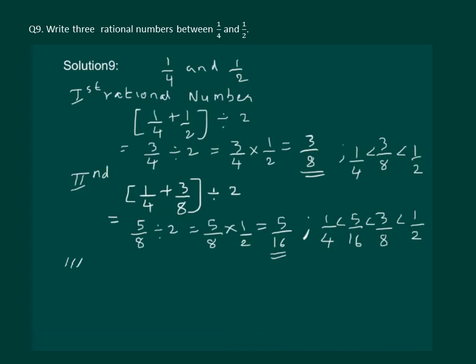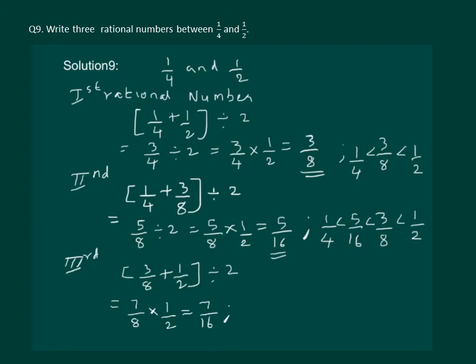To find the third number between 1 by 4 and 1 by 2, let us take the other pair and find the mean. We have 3 by 8 plus 1 by 2, whole divided by 2, which gives us 7 by 16 as the third rational number lying between 1 by 4 and 1 by 2.